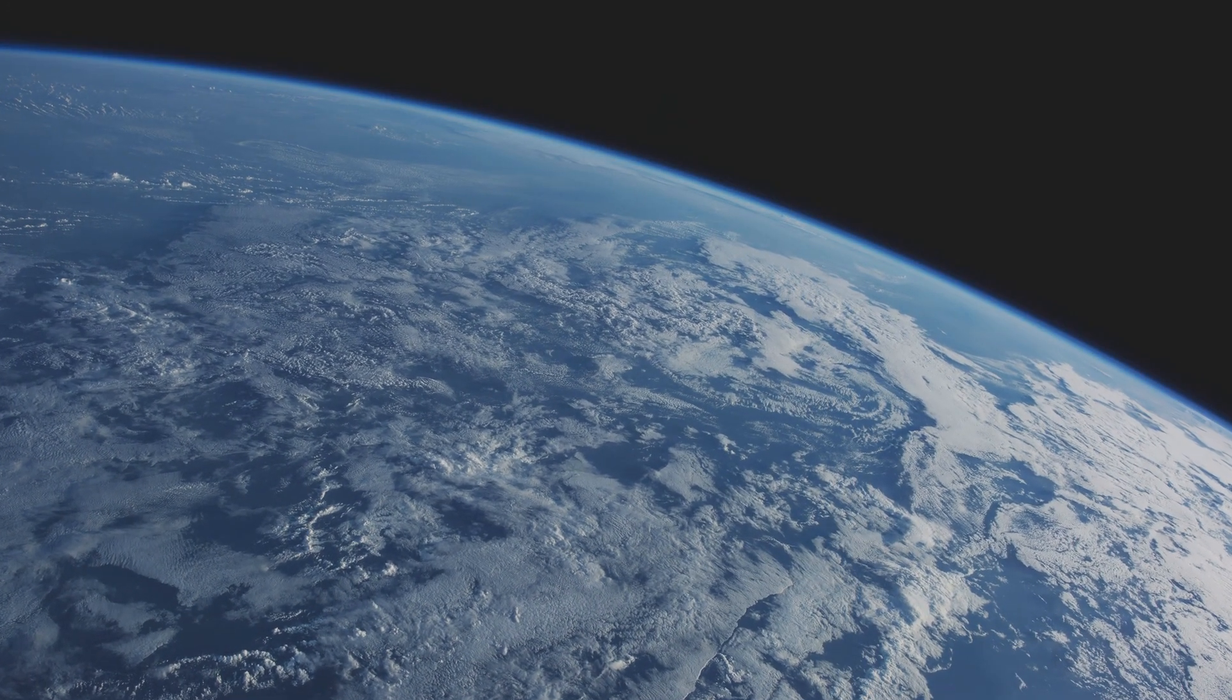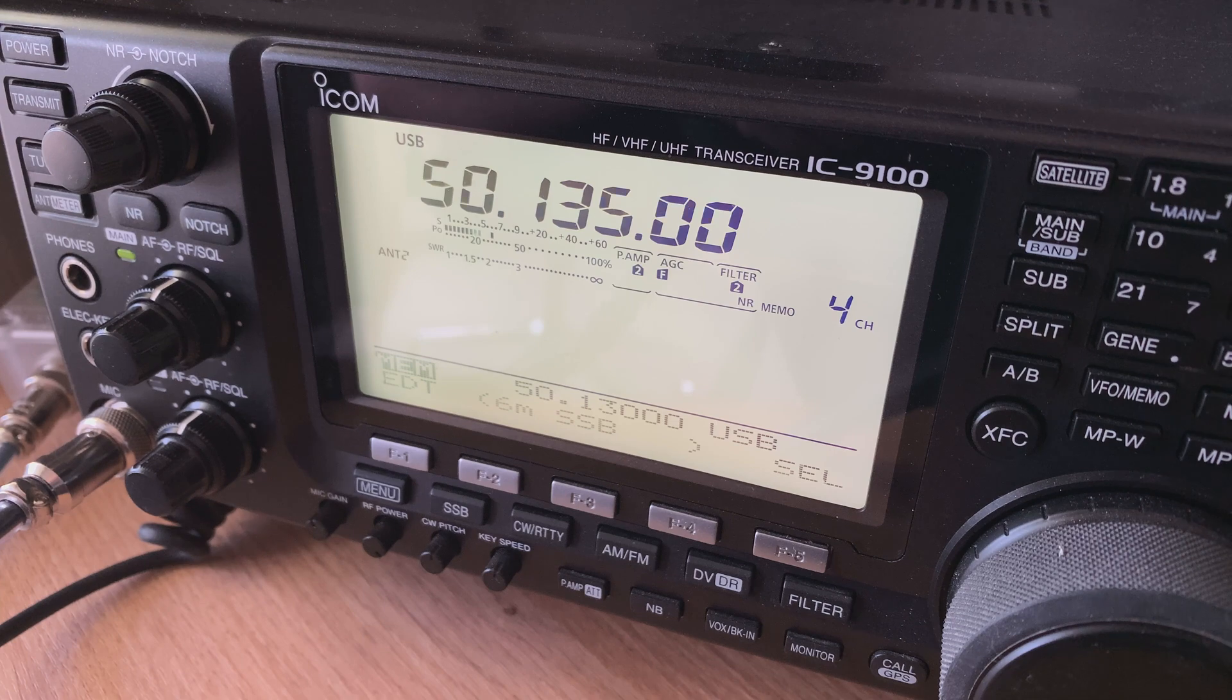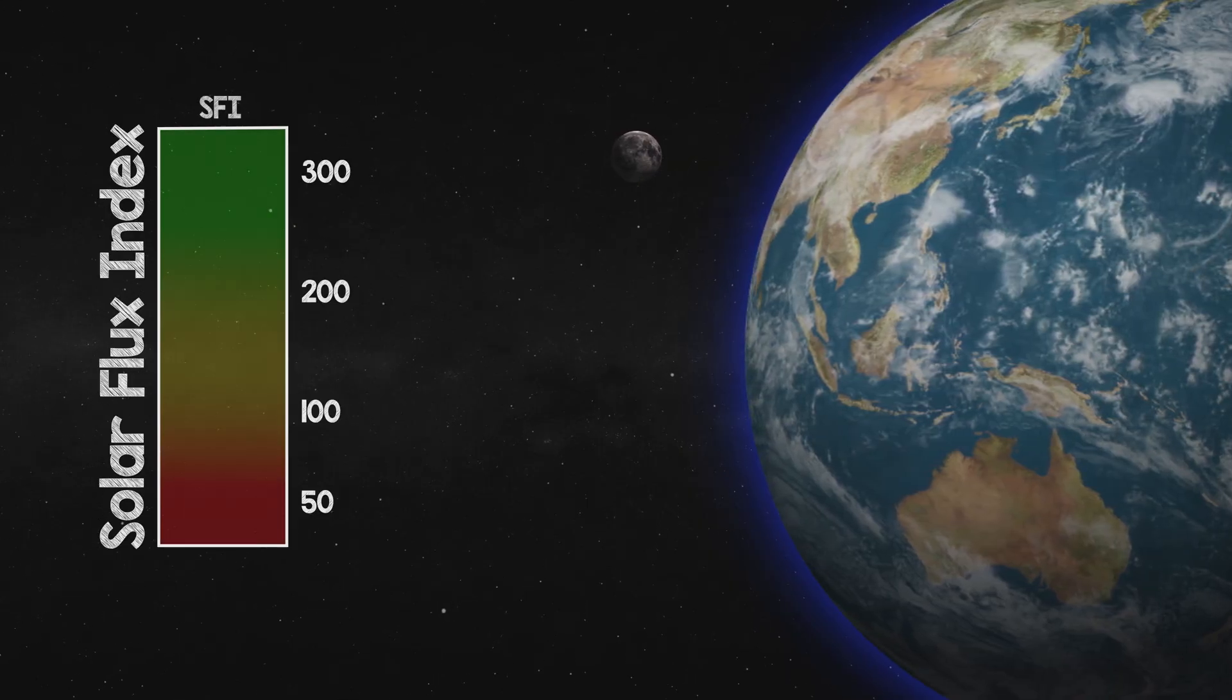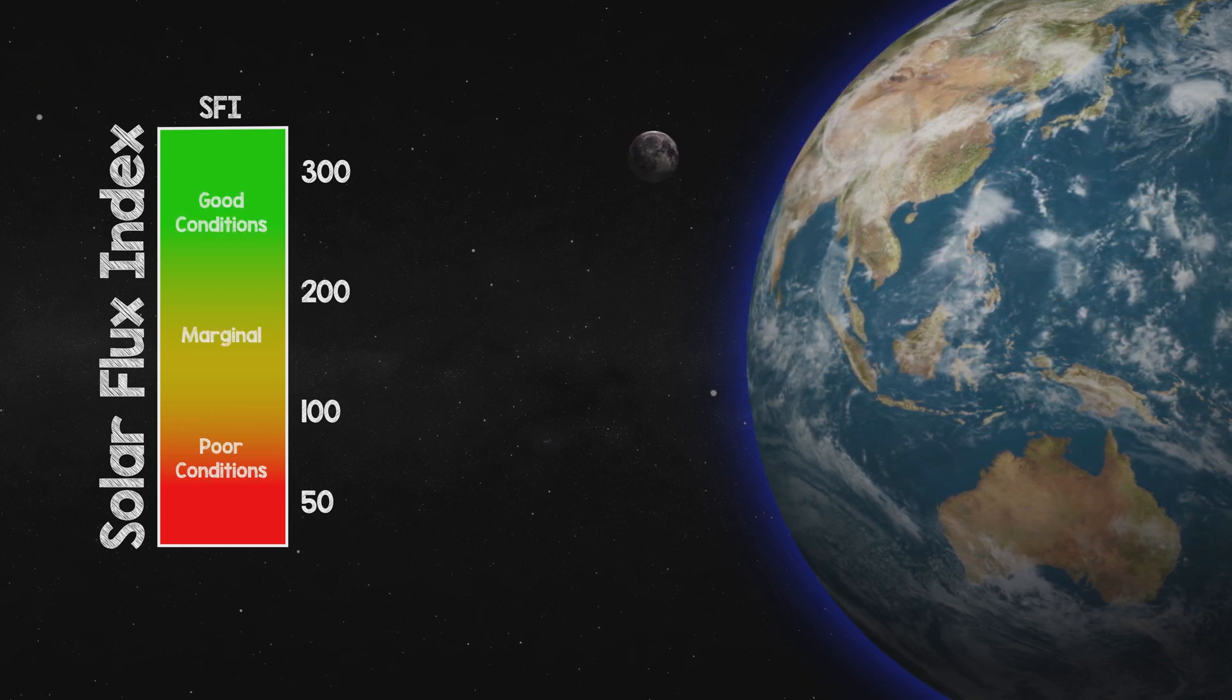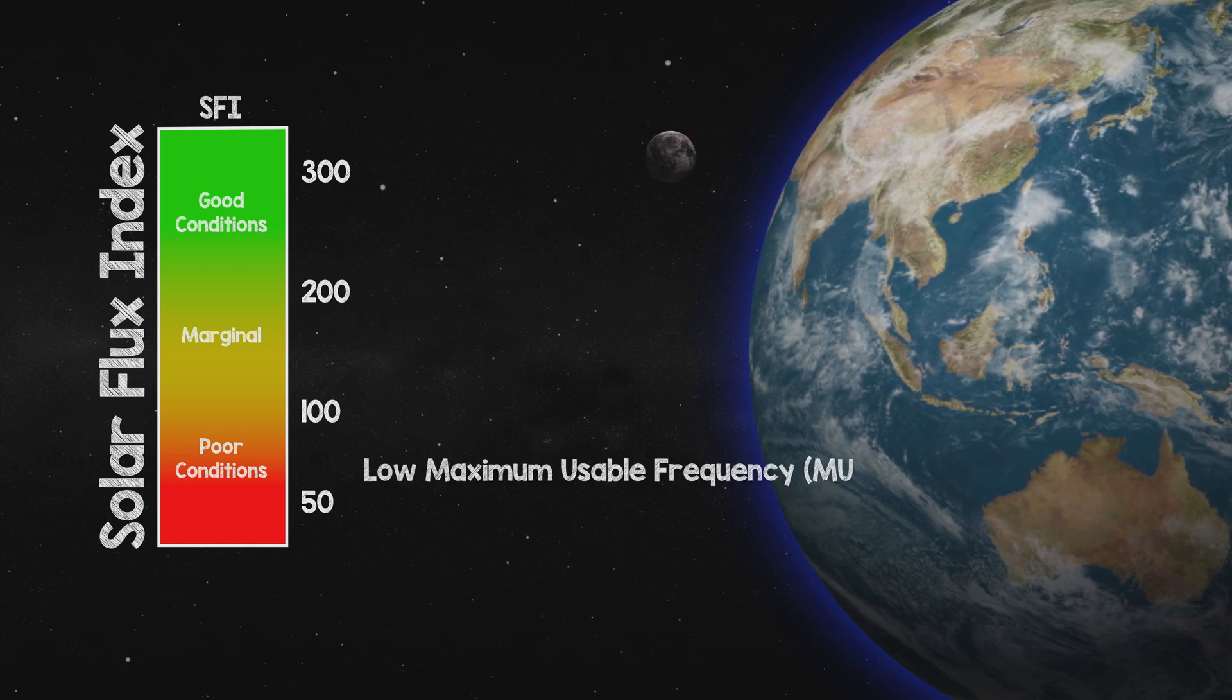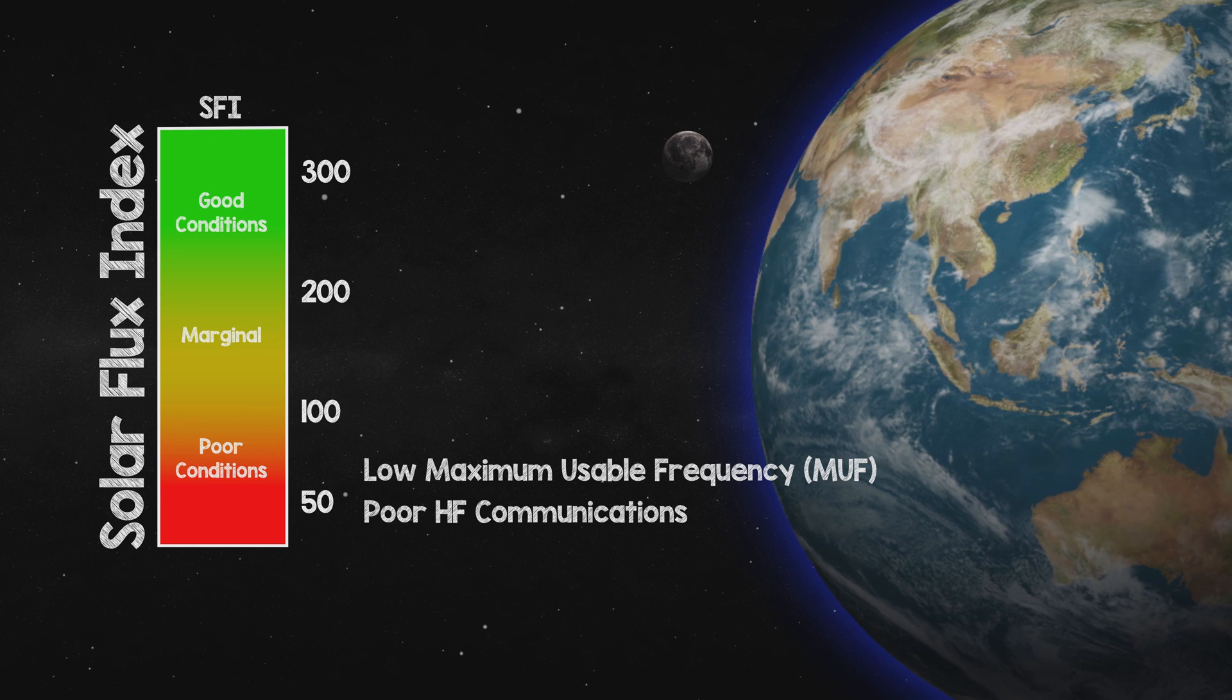As a result, it gives a very good indication of conditions for long-distance communication. The figure for solar flux can vary from as low as 50 or so to as high as 300. Low values indicate the maximum usable frequency will be low and overall HF communications will not be very good.